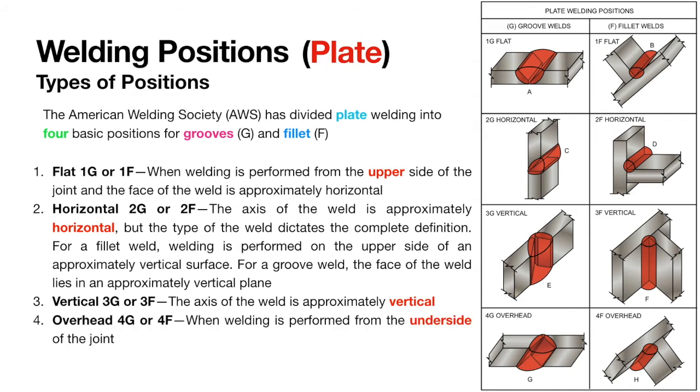Let's take a look at flat position. The easiest type to perform is the flat position, which is also sometimes called the downhand position. It involves welding on the top side of the joint. In this position, the molten metal is drawn downwards into the joint, resulting in a faster and easier weld.